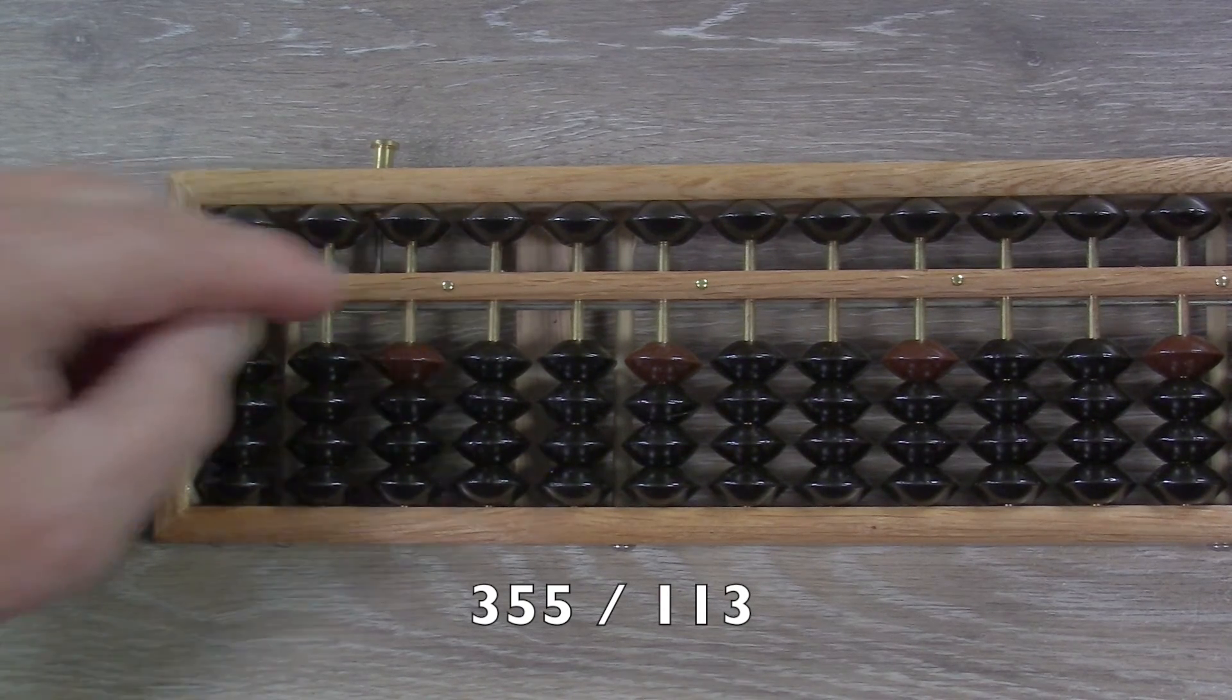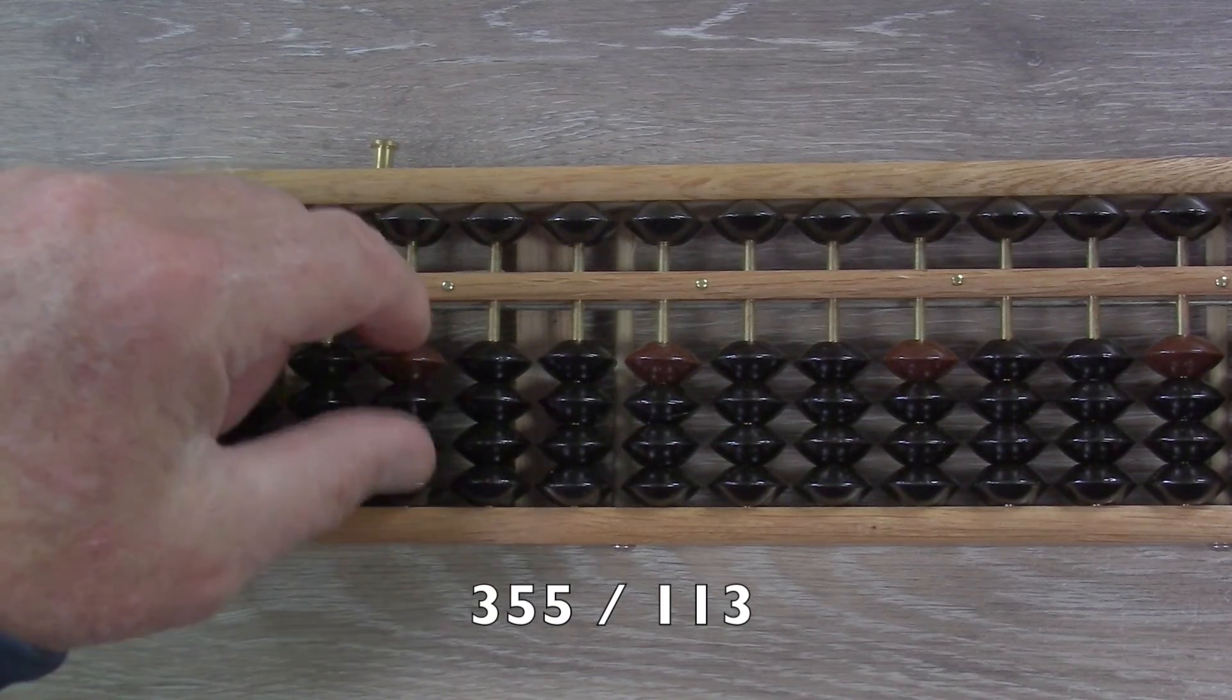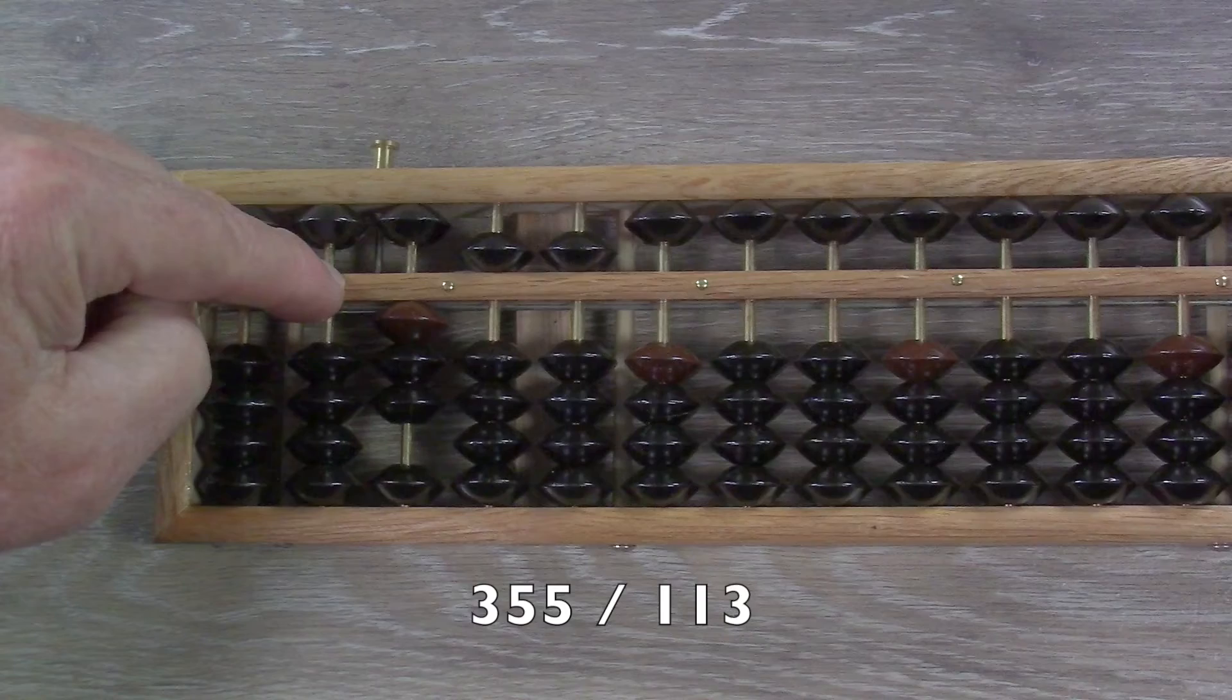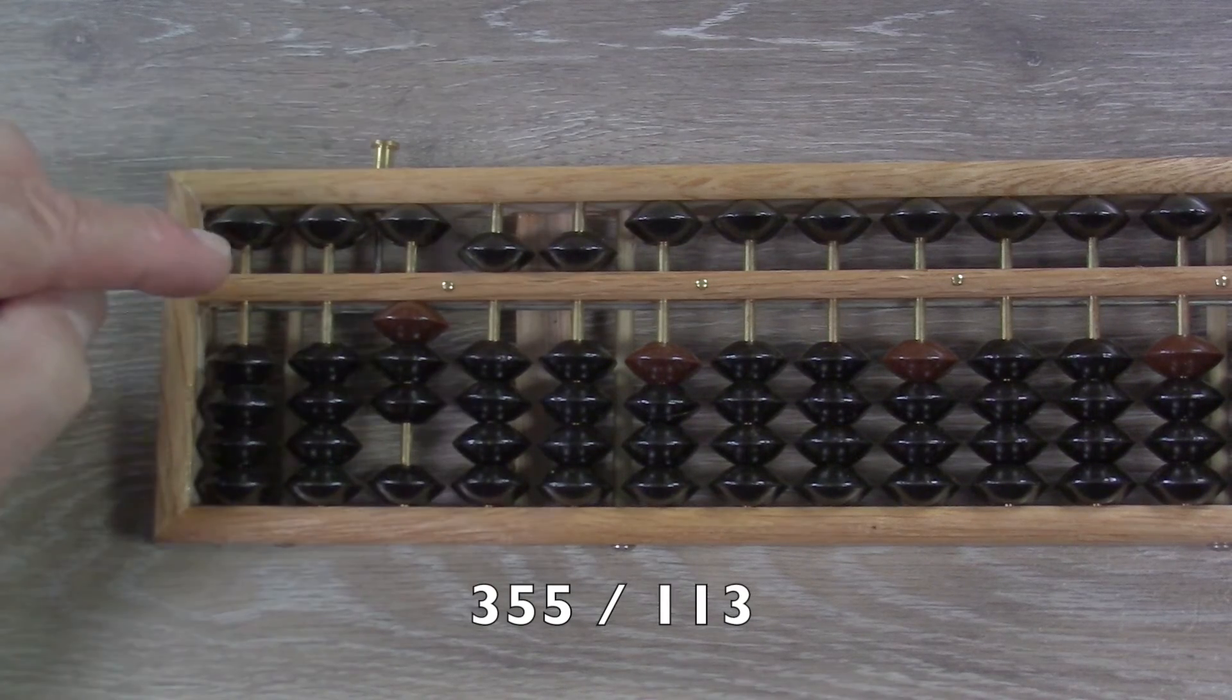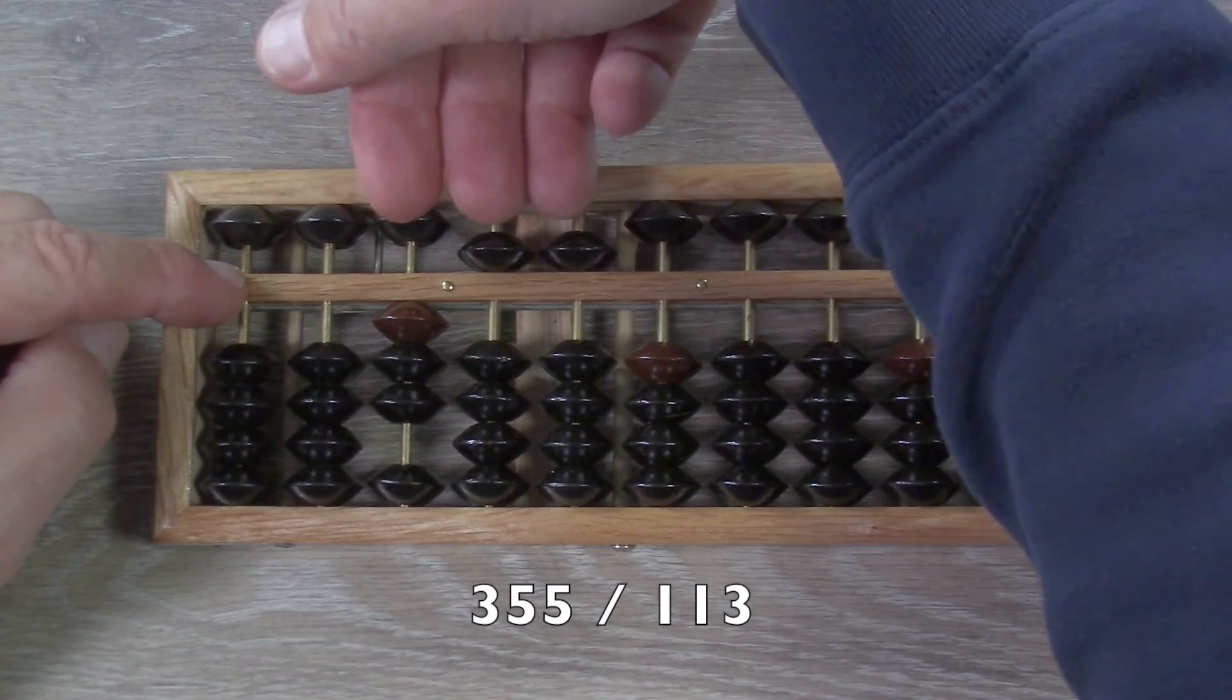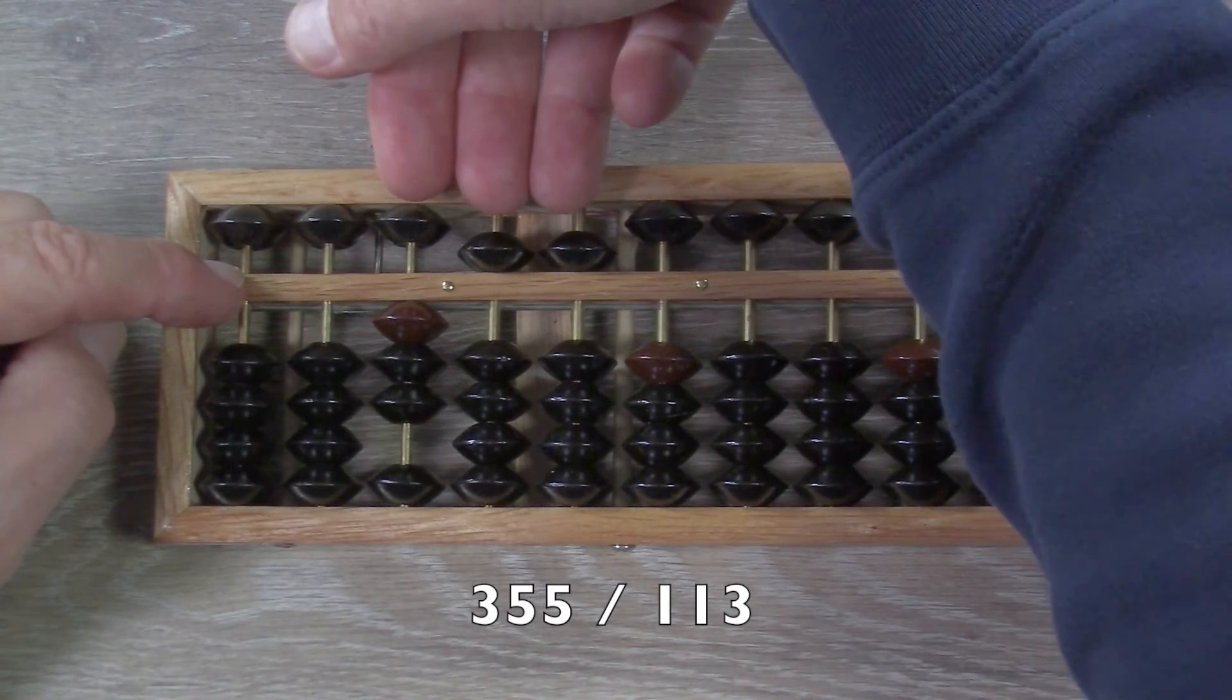And the way this works is, I'm going to put the 355 on starting in this row. I have a blank rod to separate it, and then this rod will be the count, how many times we subtract it.